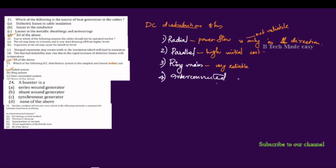The interconnected system connects the ring main feeders and generating stations together, forming the interconnected distribution system.